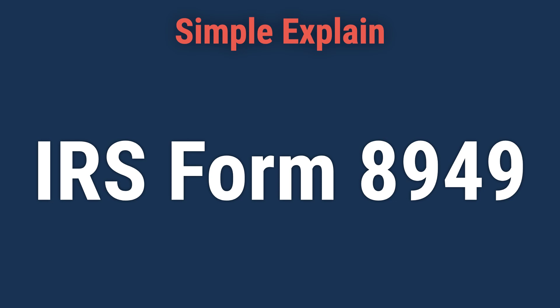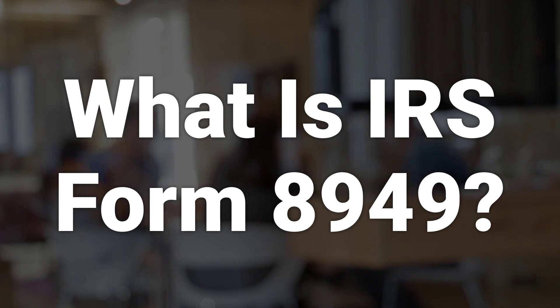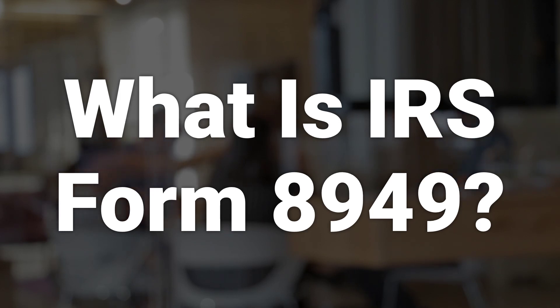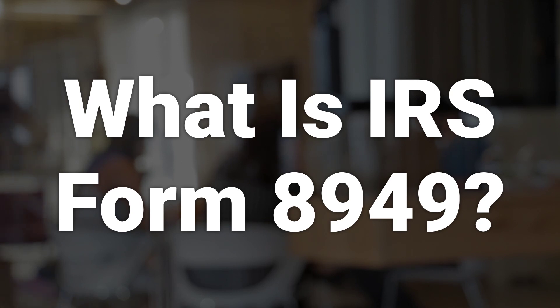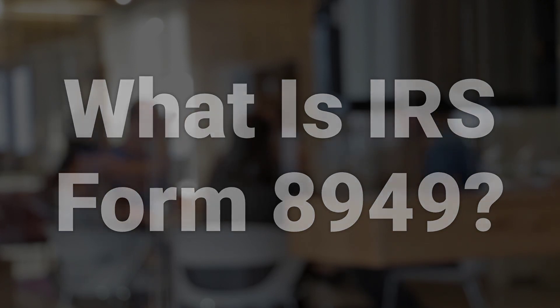Hi. Let's learn about IRS Form 8949, Sales and Other Dispositions of Capital Assets. IRS Form 8949 is used by individuals and businesses to report capital gains and losses from investments for tax purposes. This form is crucial in determining the net gain or loss that is then entered on Schedule D of IRS Form 1040. It reconciles the amounts reported to taxpayers and the IRS on Form 1099-B that brokerages provide annually.